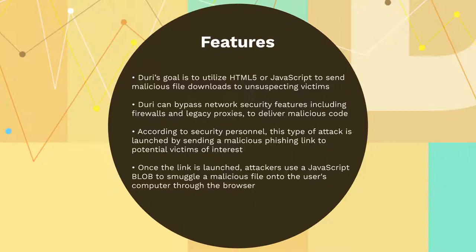An occurring cybercrime, referred to as the Duri campaign, has been active since July 2020. Its goal is to utilize HTML5 or JavaScript to send malicious file downloads to its victims. Duri can bypass network security features, including firewalls and legacy proxies, to deliver malicious code.